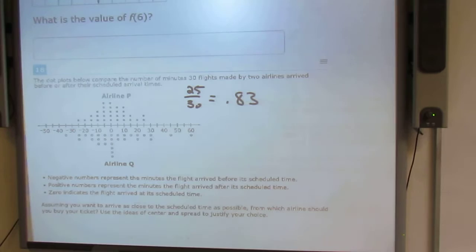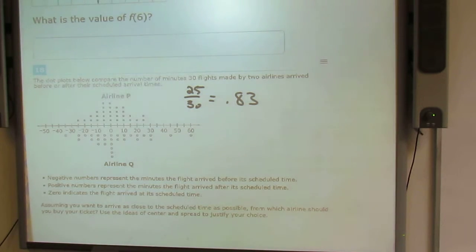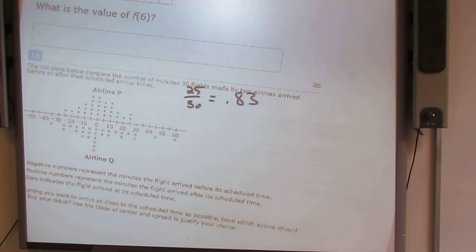Okay, now I'm going to look at the other airline. Alright, so I got 35 plus 50 plus 20 plus 30 plus 30 plus 15 plus 50.